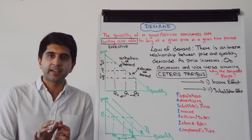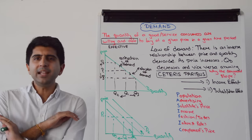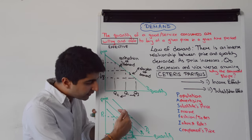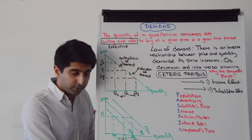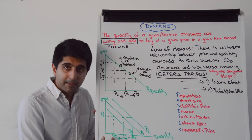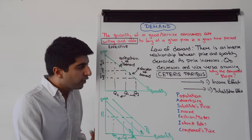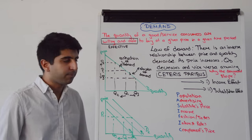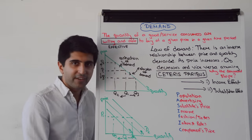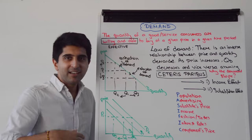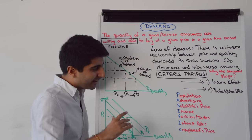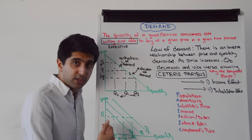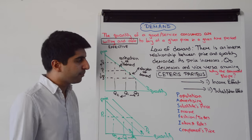Crucially, non-price factors affect demand completely independent of price. At the same price, if the demand curve shifts to the right, there is more demand; if it shifts to the left, there is less demand. So what are these non-price factors? Just remember PACIFIC — I spelled it with an S on purpose so it all fits together.